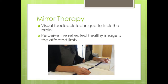In mirror therapy, visual feedback tricks the brain to perceive the reflected, healthy image as the affected limb. This visual feedback informs perception of movement, which impacts pain and motor sensation to falsely perceive the limb as being more useful than it actually is. To set up, place the mirror at the patient's midline on an angle so that the reflected limb can be viewed as the affected side. The involved limb should be hidden from view behind the mirror. Remove any jewelry and try to cover any tattoos, piercings, or markings so that the illusion is more realistic.